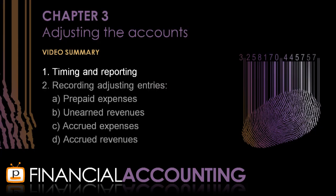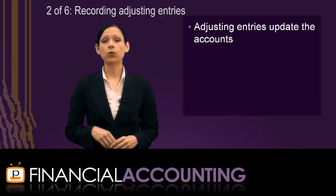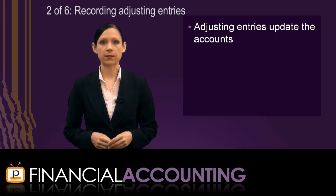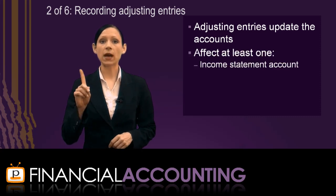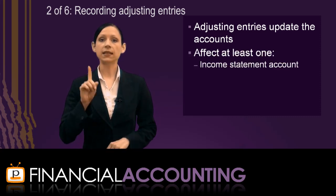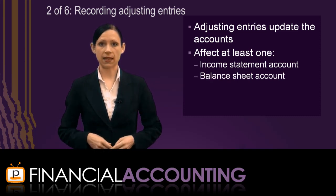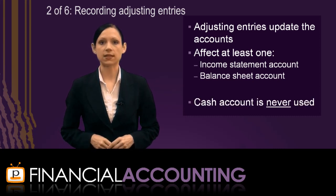Now that we've discussed timing and reporting issues, we're ready to talk about recording adjusting entries. The reason we record adjusting entries is to update the accounts to reflect the revenues earned and expenses incurred during the accounting period. Each adjusting entry will affect at least one income statement account — either a revenue or an expense account — and at least one balance sheet account, which will be either an asset or a liability account. Remember, the cash account is never used in adjusting entries.